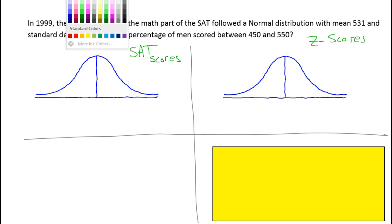Now let's add some numbers to our graphs. So they mentioned that for SAT scores, the mean is 531. This line right down the middle is the mean. Now for z-scores, the mean is always zero.